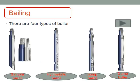Bailing is used to retrieve sand or fluid samples from inside the well. There are four types of bailers: sample bailer, hydrostatic bailer, pump bailer, and dump bailer. All of them are attached to a slick line to perform bailing jobs.